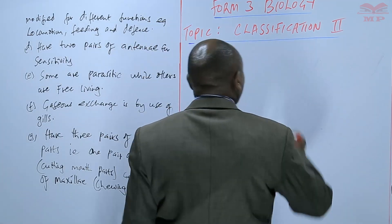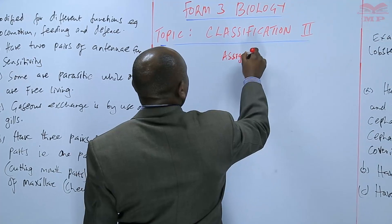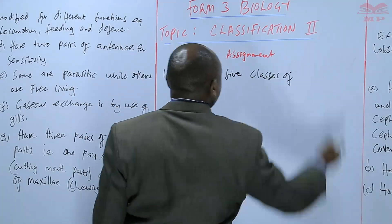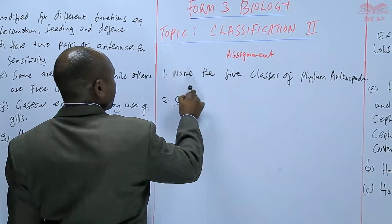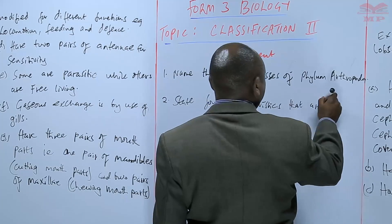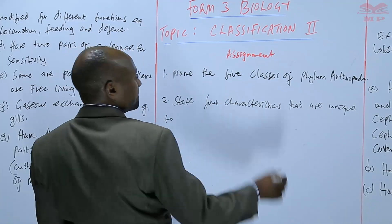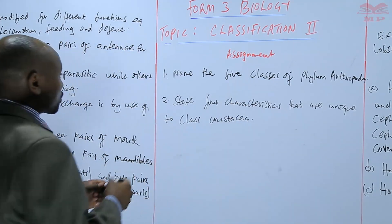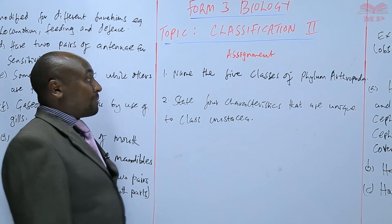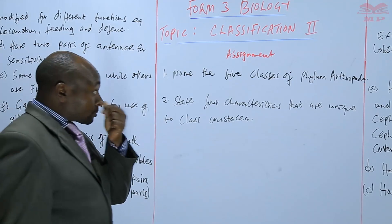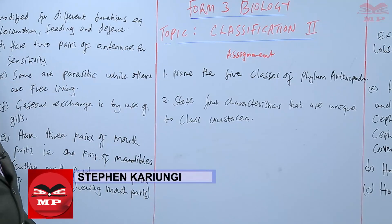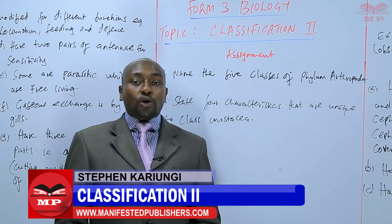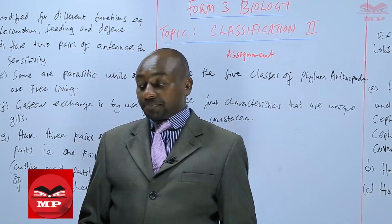We will have an assignment on that. The first question: name five classes of phylum Arthropoda. Question two: state four characteristics that are unique to class Crustacea. We will continue from there until next time — goodbye.